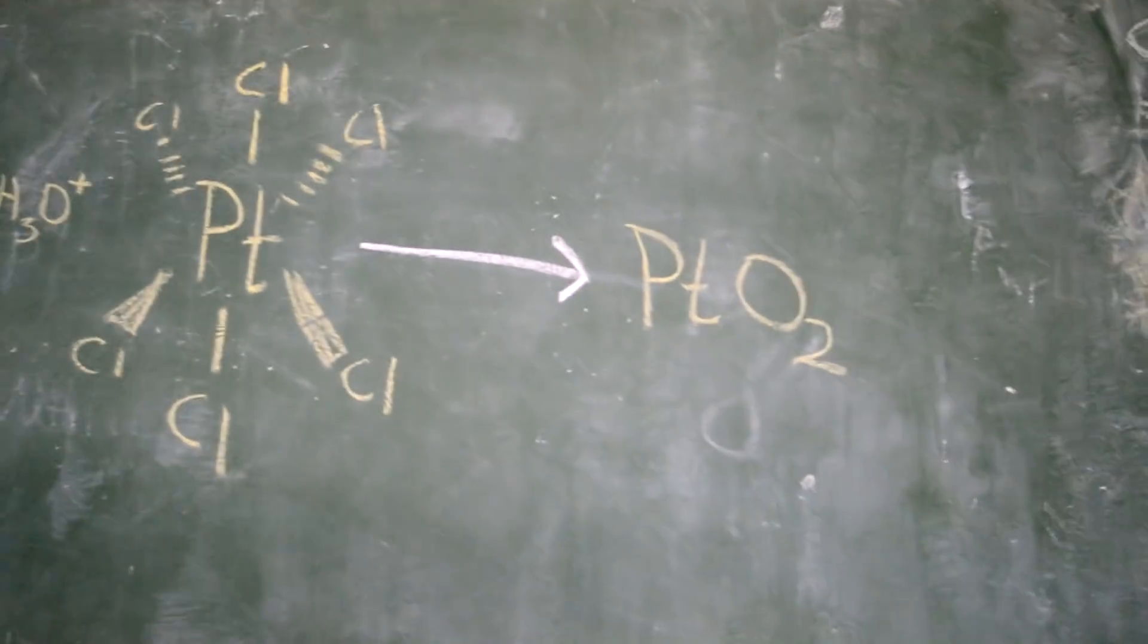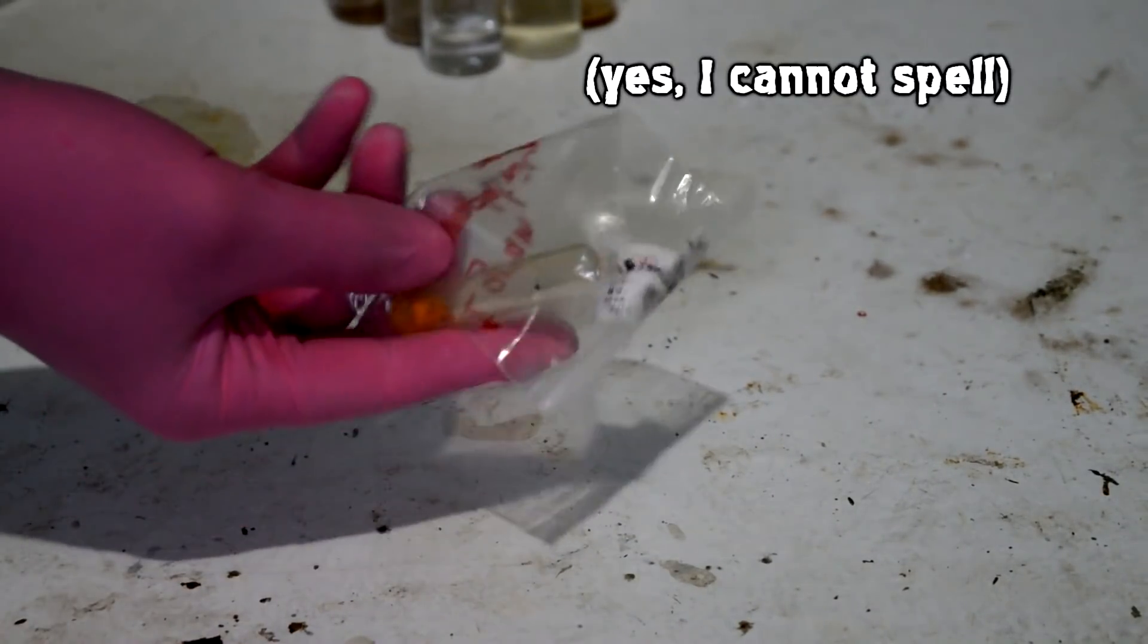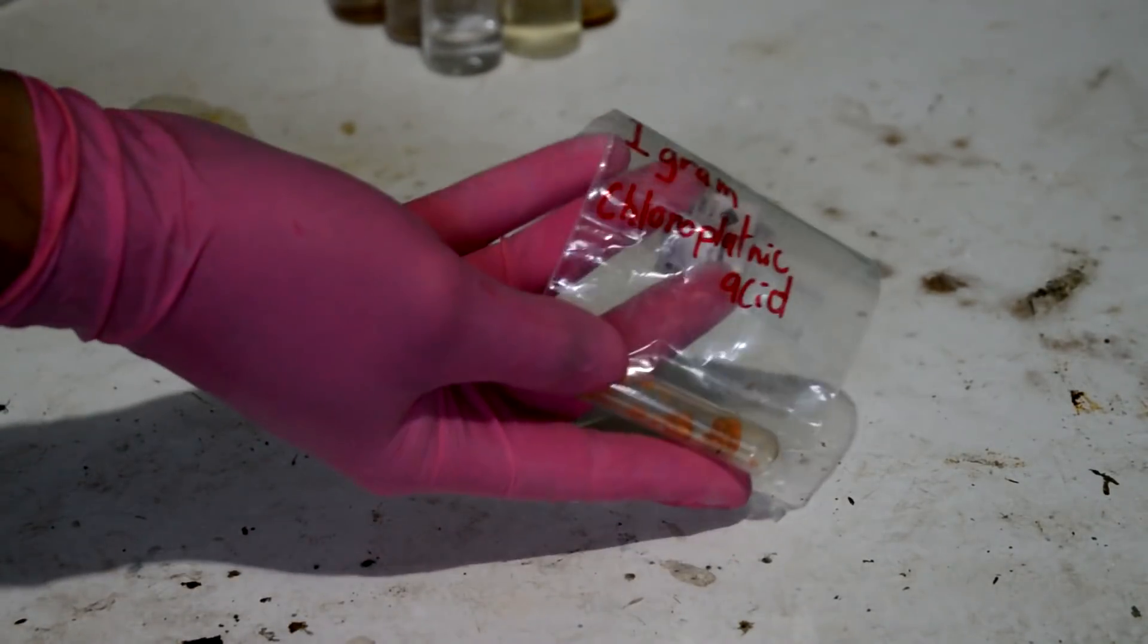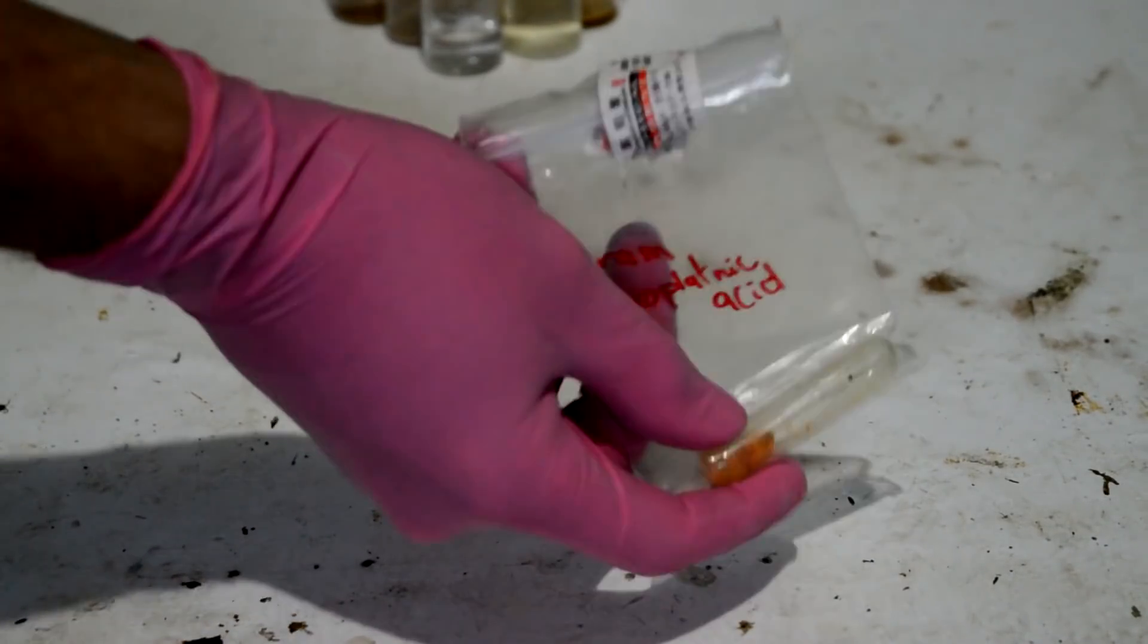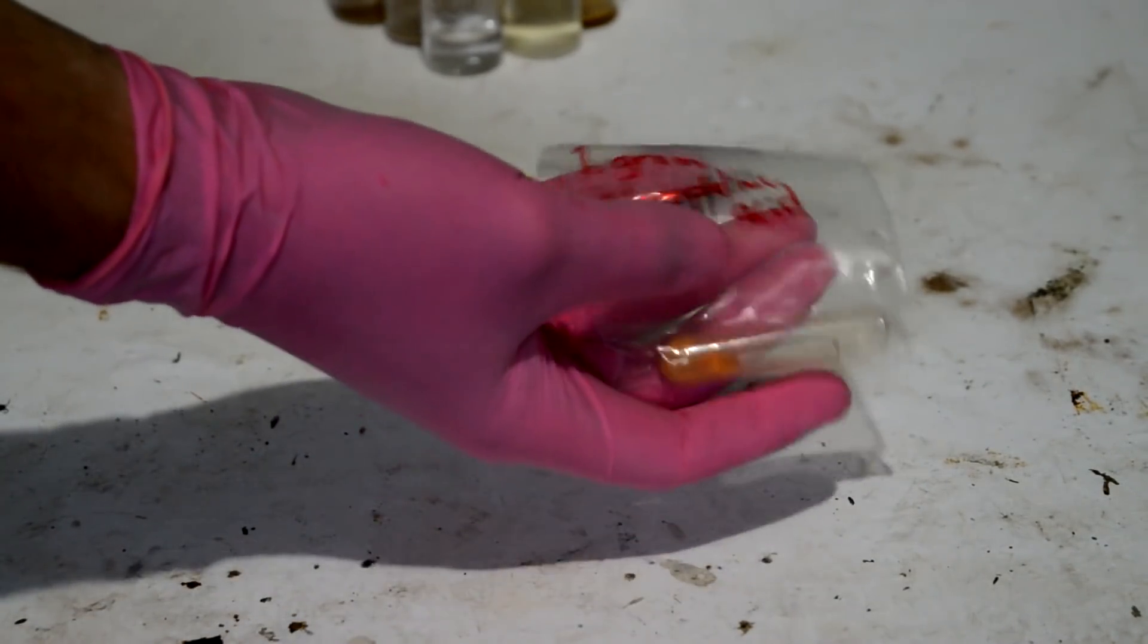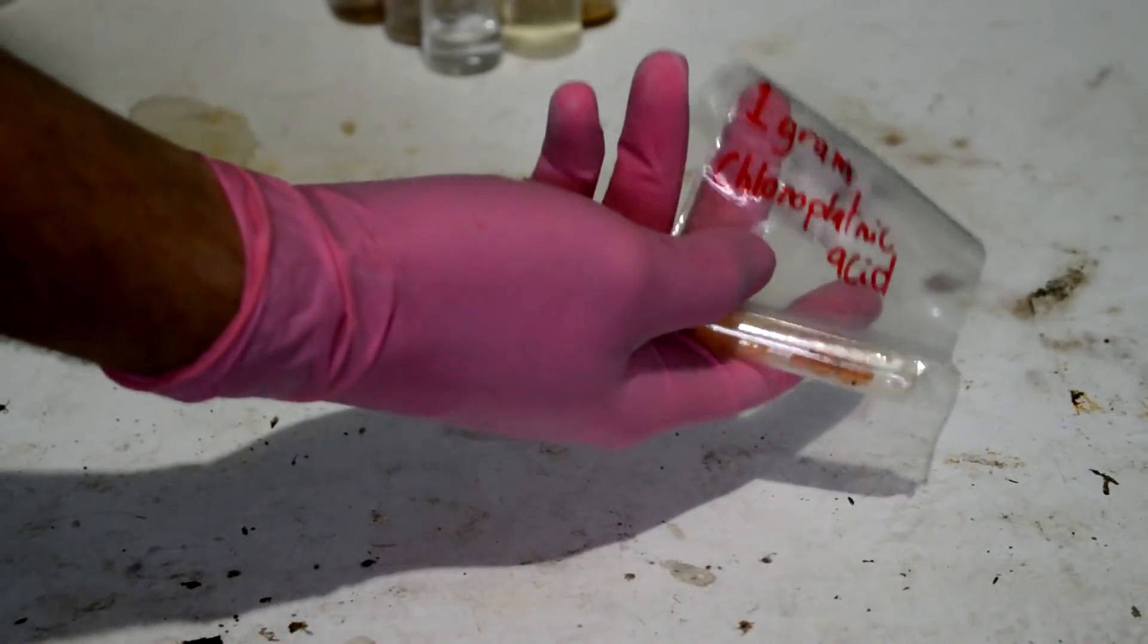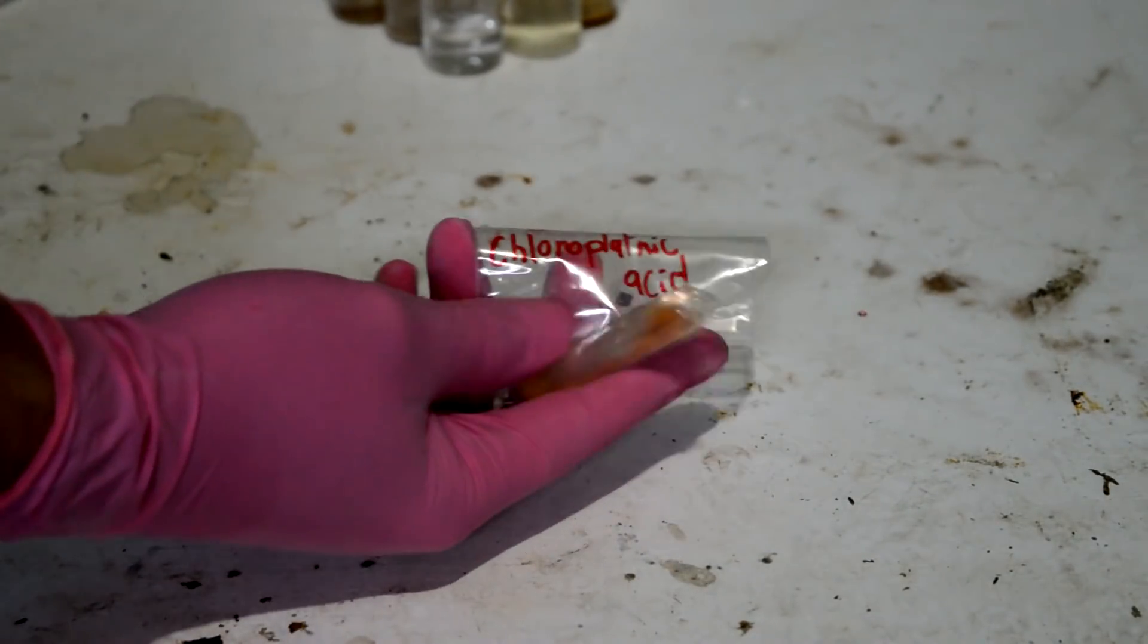The first important property of platinum is that it is quite expensive. I have one gram here in this cute little plastic vial. I bought a gram and a half off Chinese Alibaba through Aussie Chemist. I think this one gram was about $50 or so. It's expensive, but it's not prohibitively so.